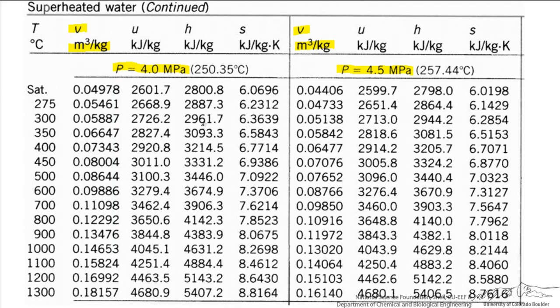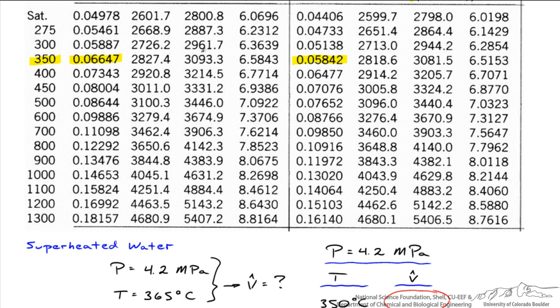Back to the superheated water table, let's work with a temperature of 350 degrees C. At a pressure of 4 MPa, we'll have a specific volume of 0.06647 cubic meters per kilogram. At 4.5 MPa we'll have a specific volume of 0.05842 cubic meters per kilogram. So in our first interpolation we'll figure out what the specific volume would be at a pressure of 4.2 MPa.